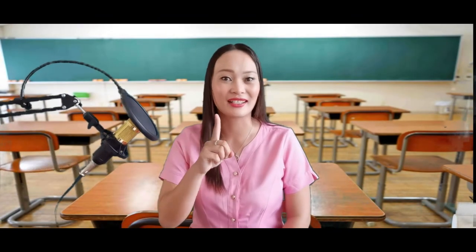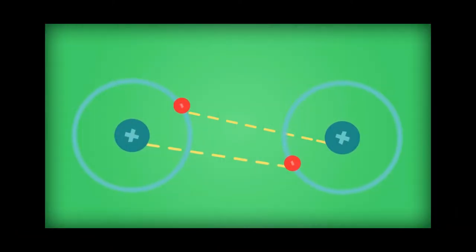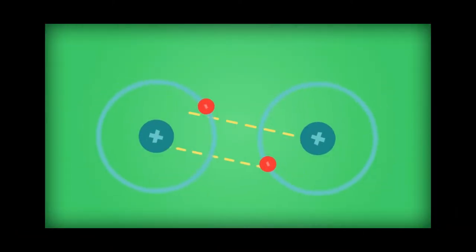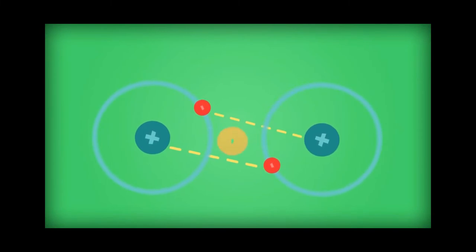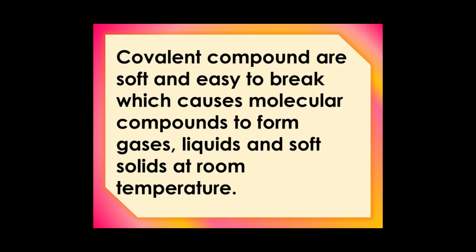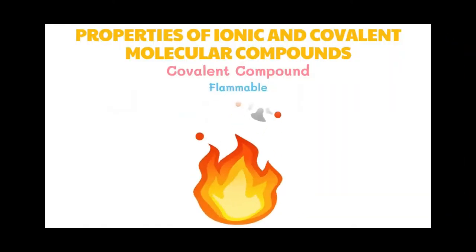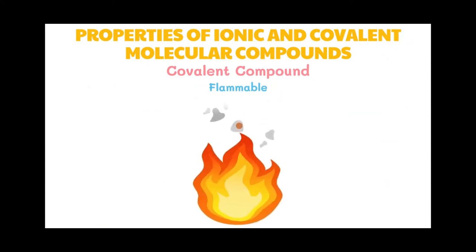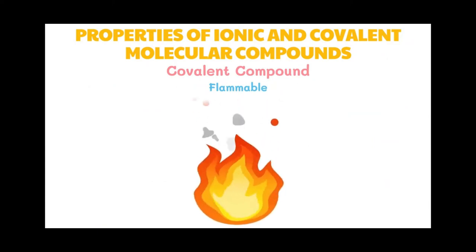Are covalent compounds as hard as ionic compounds? The answer is no. Because of the weak attraction between the molecules, covalent compounds in general are soft and easy to break, which causes molecular compounds to form gases, liquids, and soft solids at room temperature. Covalent compounds tend to be more flammable than ionic compounds.